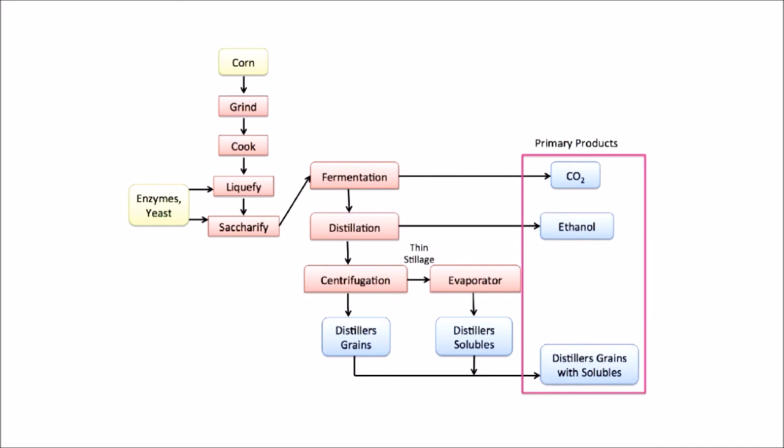The crush is made to cool and exchange to fermenters and yeast is included. The change of sugar to ethanol and carbon dioxide starts. The aging procedure for the most part takes around 40 to 50 hours. Amid this piece of the procedure, the crush is fomented and kept cool, to encourage the action of the yeast.